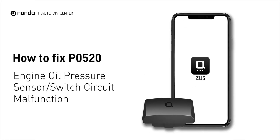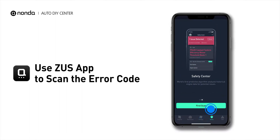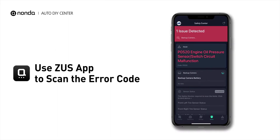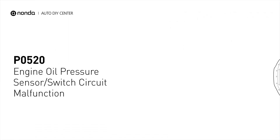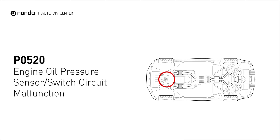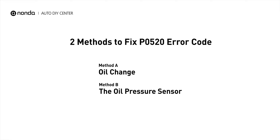If you are getting a P0520 error code, this video is going to show you two practical solutions to fix the error code at home. Use the Zeus app to scan your vehicle and see the error code P0520. It indicates that the engine computer reads a signal from the sensor that is either too high or too low in relation to the manufacturer's parameters. Here are two simple DIY methods you can try to solve this problem.